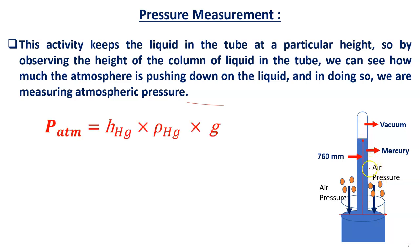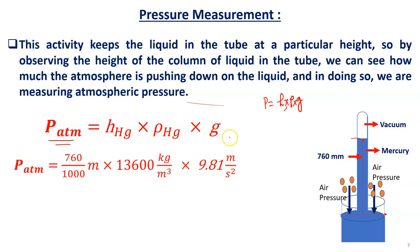Using P = h × rho × g, atmospheric pressure equals h_Hg × rho_Hg × g. Mercury in the glass tube rises to 760 mm (0.760 m). The density of mercury is 13,600 kg/m³ and acceleration due to gravity is 9.81 m/s². Substituting: P_atm = 0.760 × 13600 × 9.81.